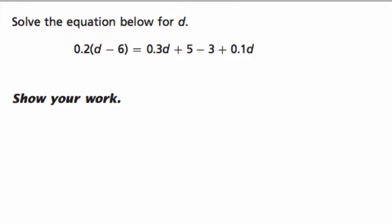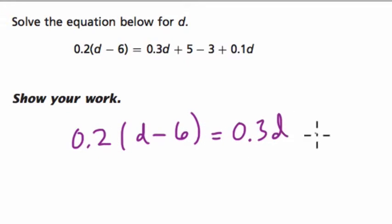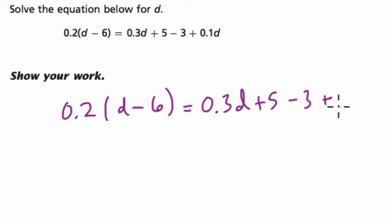So I like to start these kind of questions just by rewriting everything I see. We've got 0.2 times d minus 6 equals 0.3d plus 5 minus 3 plus 0.1d. So the first thing I'm going to do is combine like terms because I think this thing looks scarier than it really is.